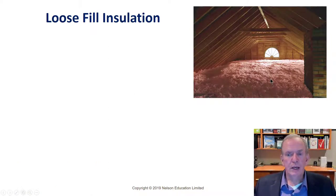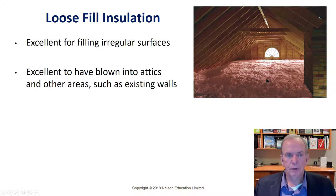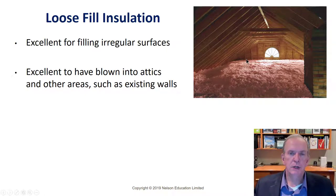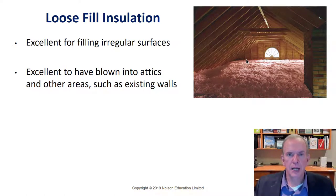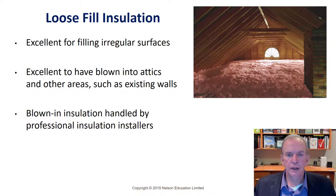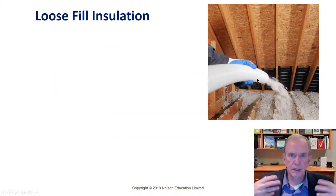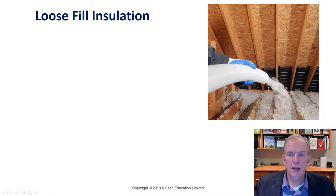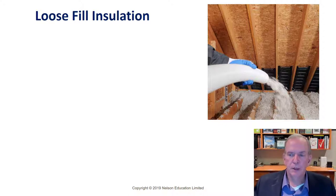Loose fill can be blown in. You can get practically any kind of material blown in — cellulose like a paper-based material, fiberglass chunks, even recycled denim jeans chopped into shreds. Basically, somebody's in a truck below with a big blower, somebody's dumping bags, and somebody's up in the attic blowing it in and filling it all up. This is pretty easy — you could get this up to around R-60 with about 18 inches. The updated Doncaster drawings show R-60 in the attic; the Brook drawings show R-50. Building codes have recently changed, and R-60 now meets current code.